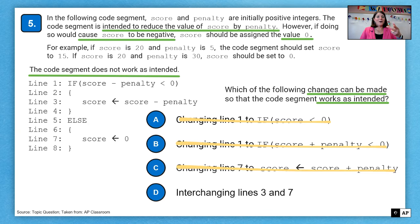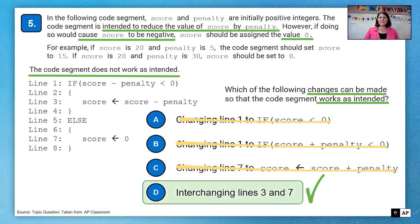And then I see choice D. Oh, switch lines three and seven. That seems to be correct because if score minus penalty is less than zero, we want to set score to zero. Otherwise, we want to go ahead and subtract like the choice of the example of 20 minus five. So D is our answer, interchanging lines three and seven.